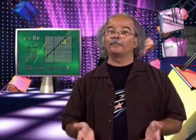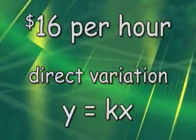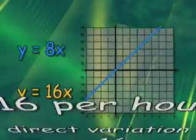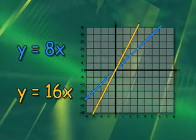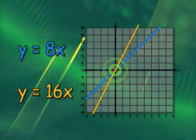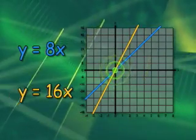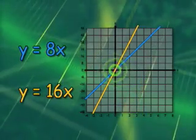Back on the job, you've worked hard, and now you're the manager of Clown Burger, with twice the pay and twice the responsibility. You're now making $16 an hour, so the direct variation is now y equals 16x. If we graph this equation, we see that the greater constant of variation has resulted in a greater rate of change and a greater slope. Also notice that both lines pass through the origin. The graph of y equals kx will always pass through the origin. The y-intercept will always be 0, and this illustrates that if you work no hours, you'll get no pay.